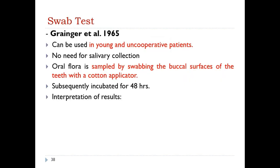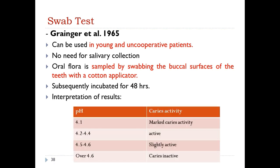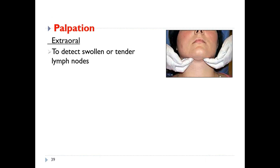The swab test is used in young and uncooperative patients and requires no salivary collection. Molar flora is sampled by swabbing the buccal surface of teeth with a cotton applicator, then incubated for 48 hours. A pH of 4.1 or less indicates marked caries activity; 4.2–4.4 is active; 4.5–4.6 is slightly active; and over 4.6 indicates inactive caries.